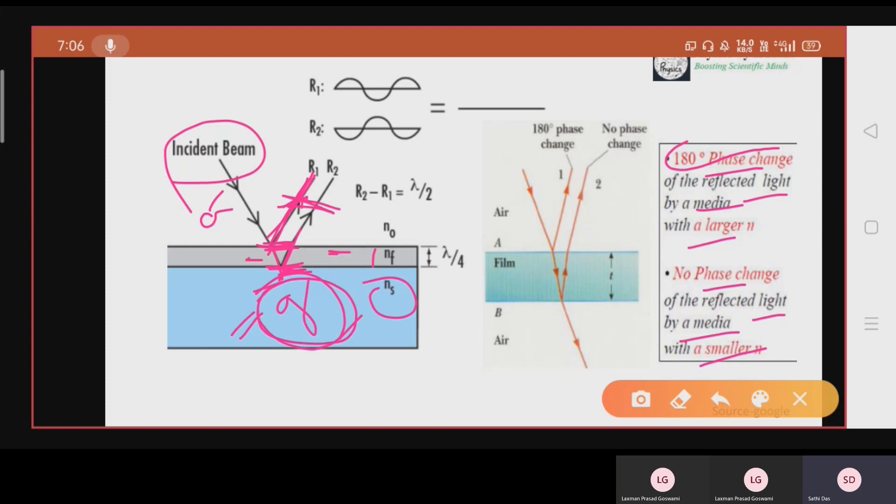The two reflected light having a phase change or path difference of lambda by 2 will interfere destructively. This light has a phase change of 180 degree or has a path change of pi lambda by 2, and this reflected light has no phase change, and both will interfere and there will be destructive interference. Destructive interference means there will be no reflected light. This will reduce the reflection due to this glass.